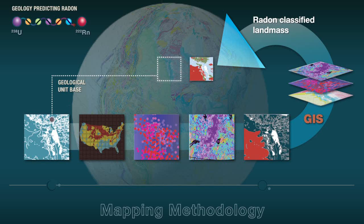GIS processing was used to evaluate each rock unit contained in the geology dataset, with respect to its U.S. radon potential classification, its uranium geochemistry, and its radiometric geophysical response. These three major parameters were then used to classify the Canadian landmass.